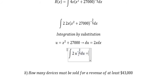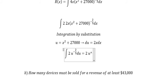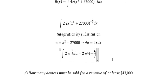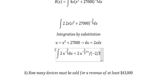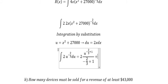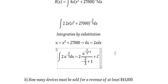The integration of U to the power of negative 2/3. You get U to the power of negative 2/3 plus 1, divided by negative 2/3 plus 1, plus C, applying the formula.